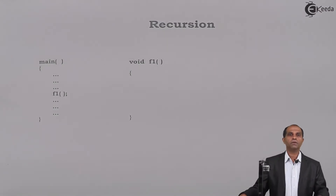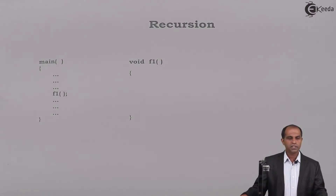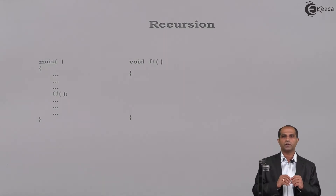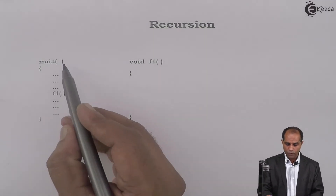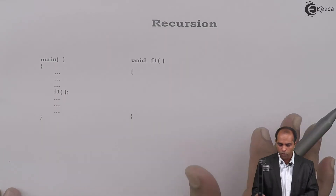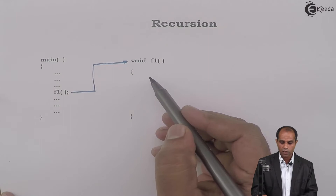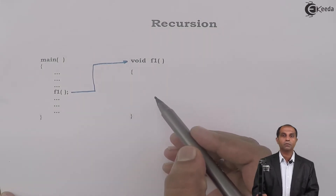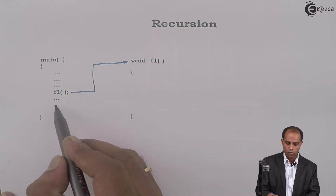Let us deal with one of the important properties of functions called recursion. Till now we have seen that a function can give a call to another function. In the main function, I'm going to give a call to a function called f1. When f1 is called, it goes to that path, does a task, and since it is a void function, it will not return any value — the control comes back to the main function.